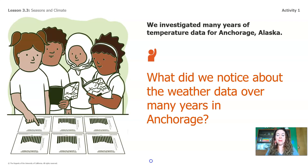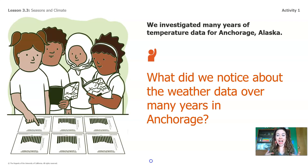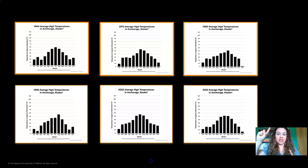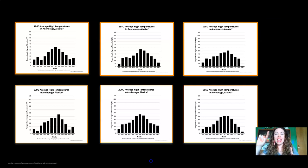In the last lesson, we investigated many years of temperature data for Anchorage, Alaska, so that we can practice looking at data over the long term. What did we notice about the weather data over many years in Anchorage? I noticed that every single one of the six cards we looked at had the same shape. Every year, we found about the same shape where the temperature started low at the beginning of the year in January, February, March, and then they got warm in the middle of the year in May, June, July, August, and then they got cool and cold again at the end of the year in September, October, November, and December. So we know that in Anchorage, we can expect to see that same pattern of temperature change over the seasons every year.